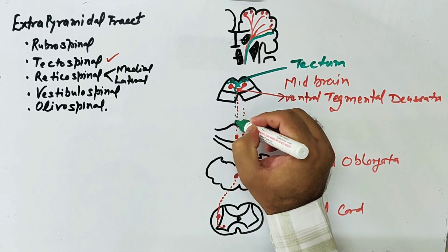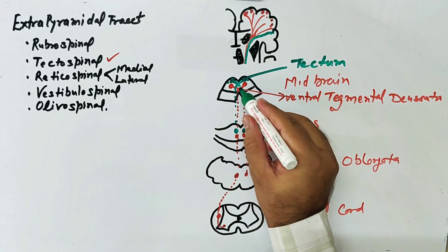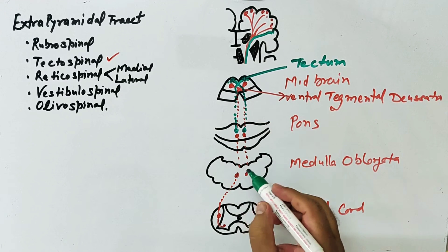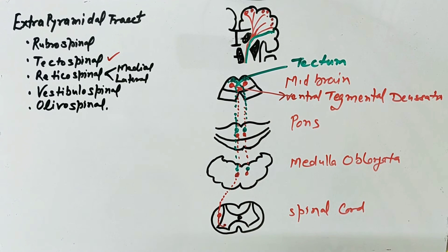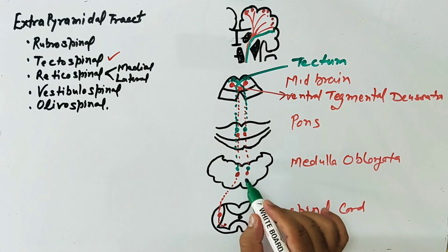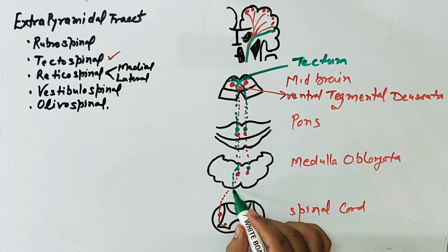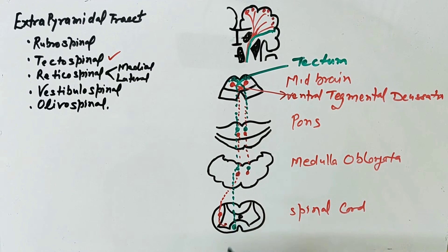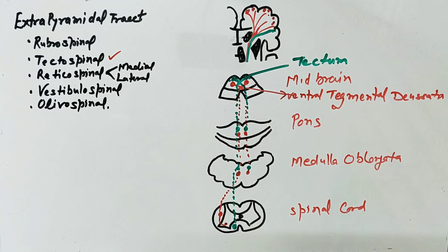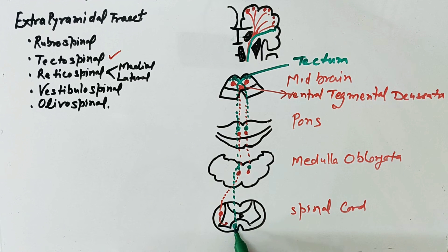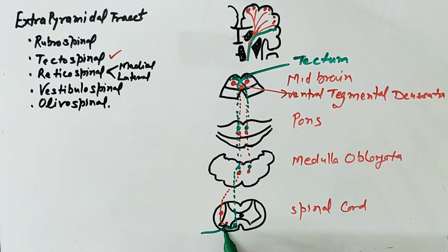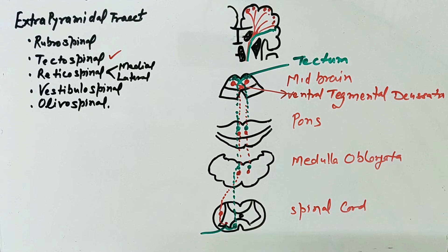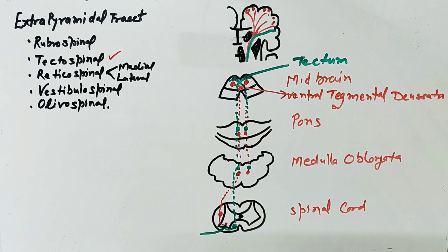From the dorsal tegmental decussation, the tectospinal tract fibers go to the opposite side. The tract travels in the anterior white column of the spinal cord. The superior and inferior colliculi are present in the tectum. From here, fibers go to the anterior horn cells and synapse with them. The tectospinal tract controls movement of the head and neck region in response to visual activity or in response to light.